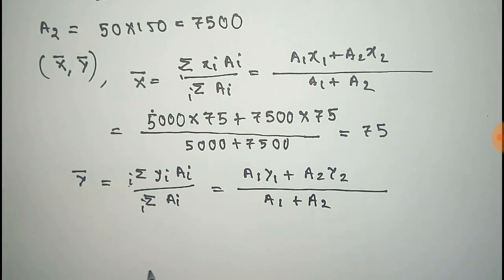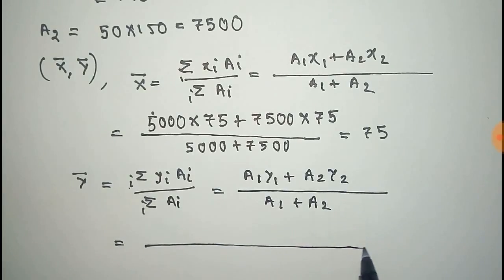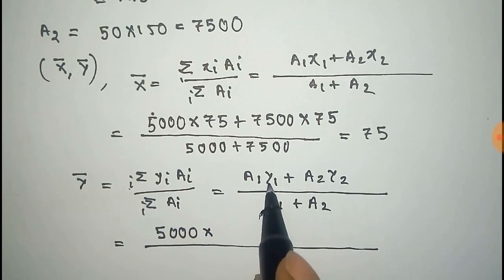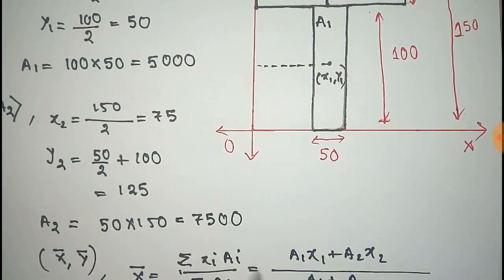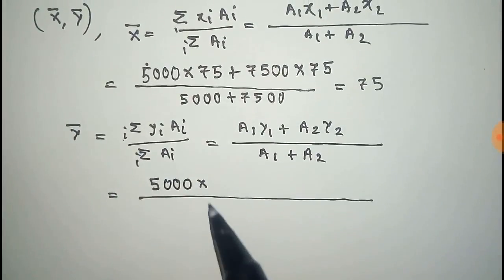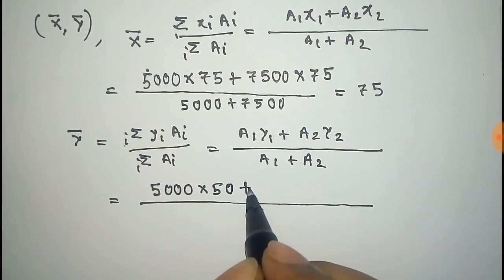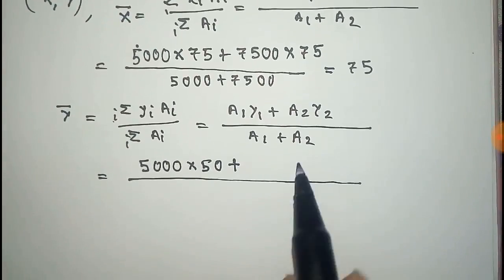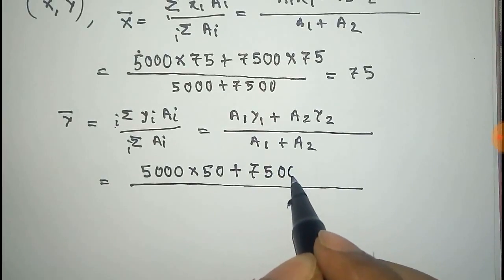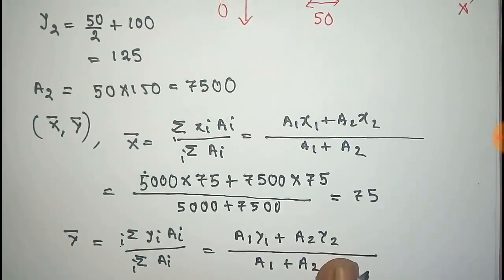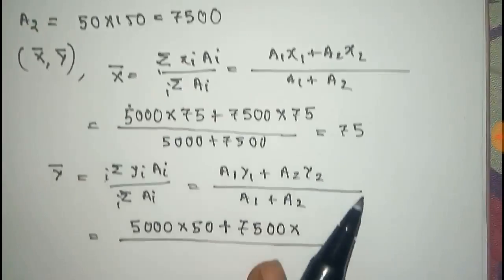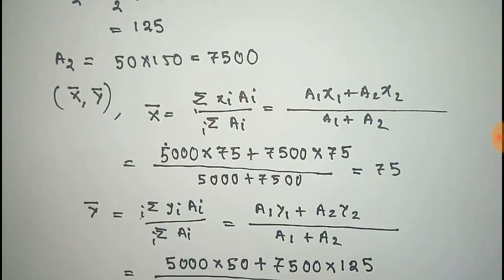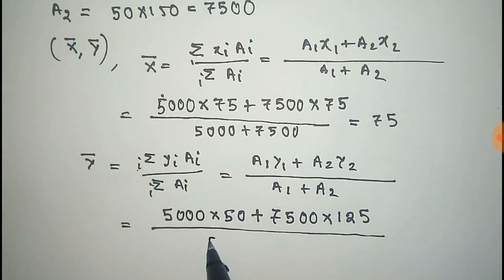Now put the values: A1 is 5,000 times the value of y1, which is 50, and A2 is 7,500 times y2, which is 125, divided by A1 plus A2, which is 5,000 plus 7,500.